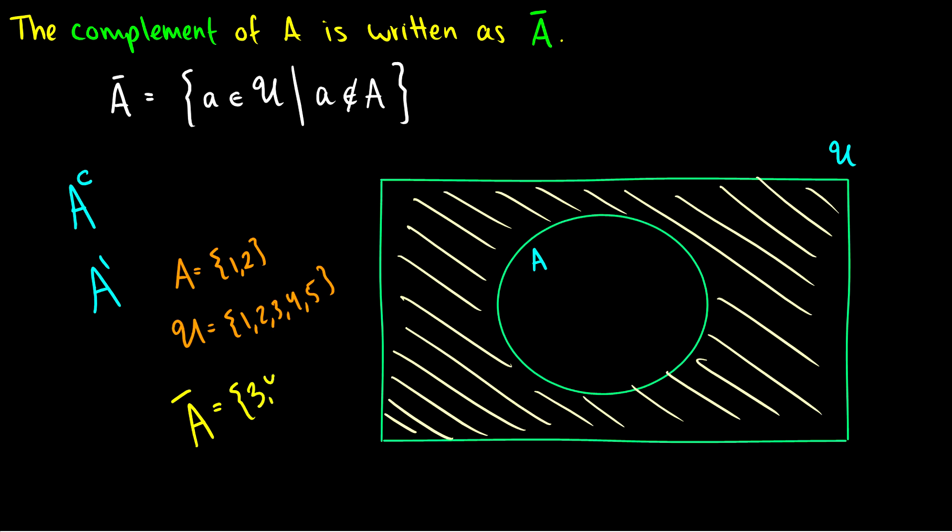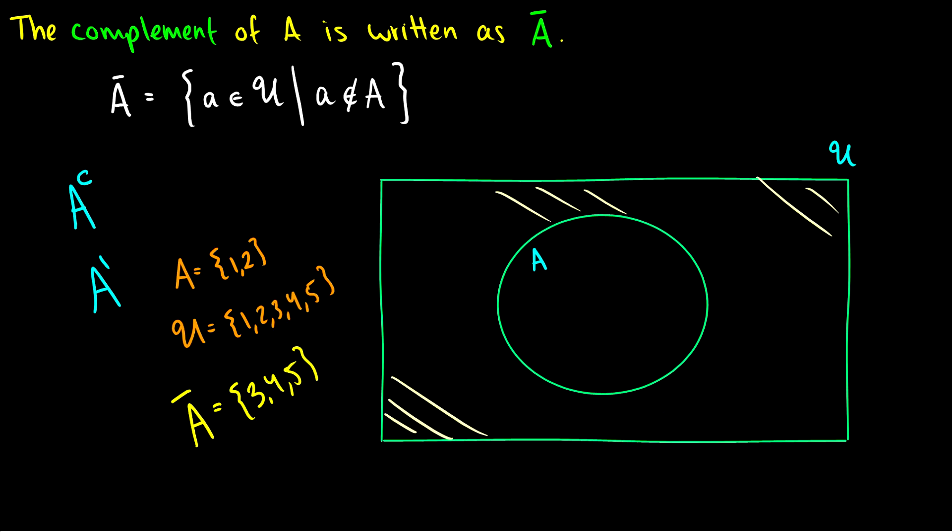Then A bar or A complement would be everything in the universe that is not in A. So A complement would be 3, 4, and 5 and we could represent it visually as 1, 2, 3, 4, 5 and then A complement is right here covering all of 3, 4, and 5. So that is the complement.